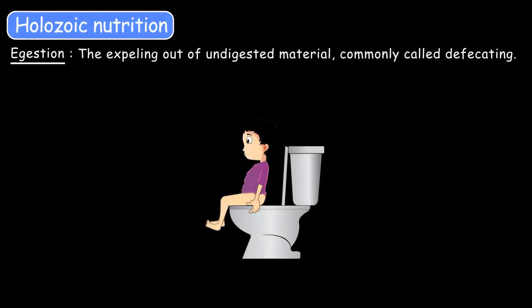The last process is ejection — the expelling of undigested material from the body. It is also called defecation. So these are the five processes that occur in holozoic nutrition.